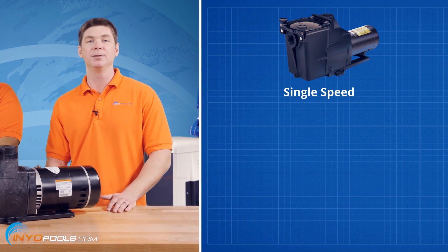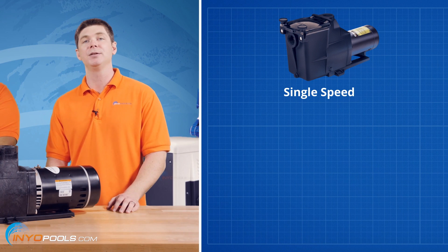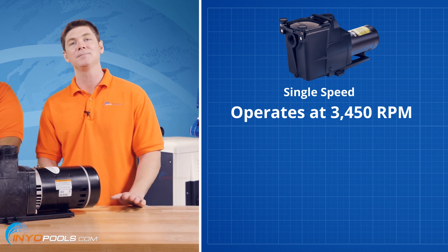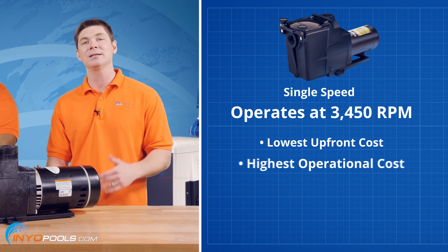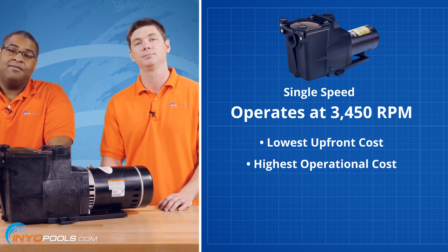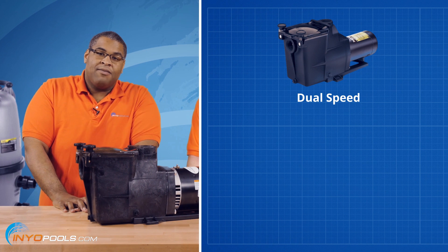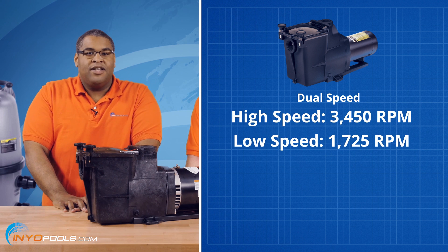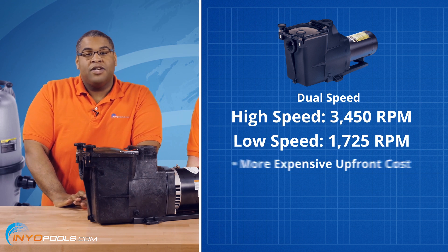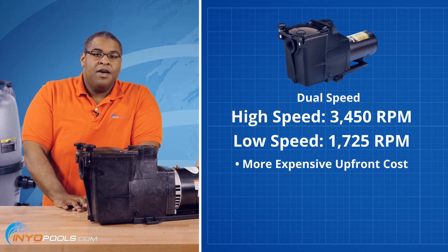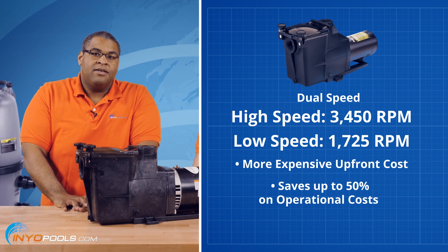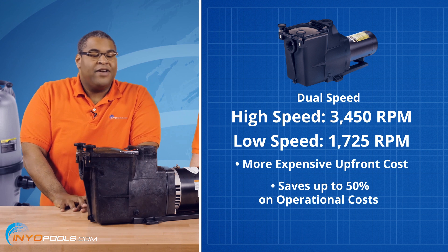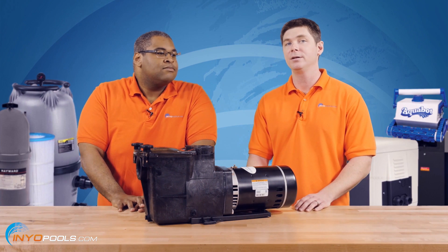The most common type is a single speed pump. It operates at a single speed of 3,450 RPM. This kind of pump has the lowest upfront cost but the highest operational cost. Next up is the dual speed pump. It operates at a high speed of 3,450 and a low speed of 1,725 RPM. It has a more expensive upfront cost compared to single speed, but can save you about 50% on the electric bill. Another benefit of running on low speed is that it's very quiet.